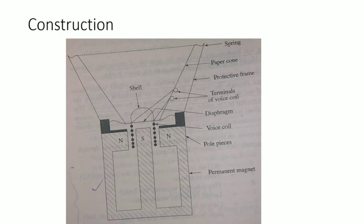The main components of the moving coil microphone are a port-type permanent magnet and a coil assembly. This coil assembly is attached to the diaphragm. The coil is positioned within the permanent magnet at the south pole.